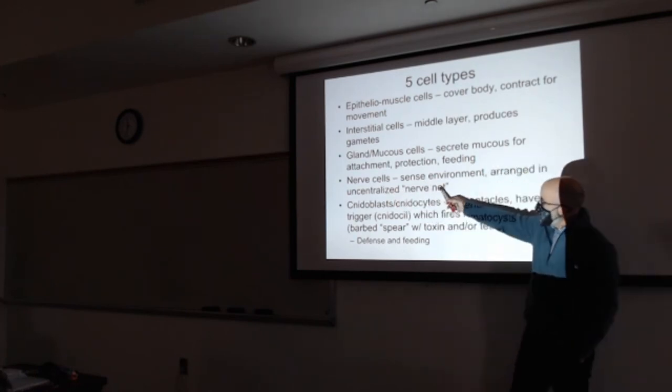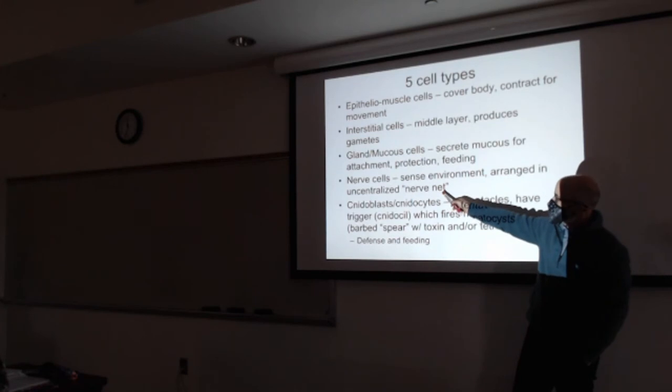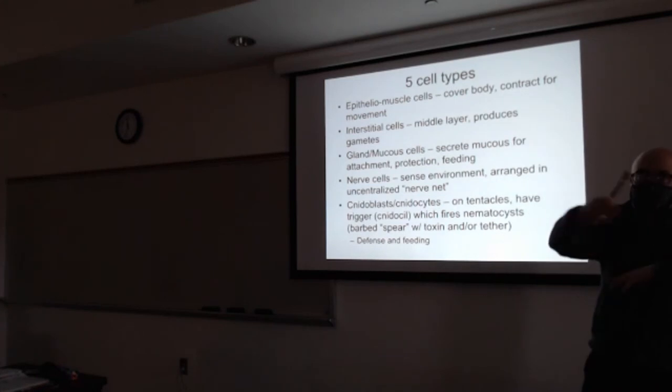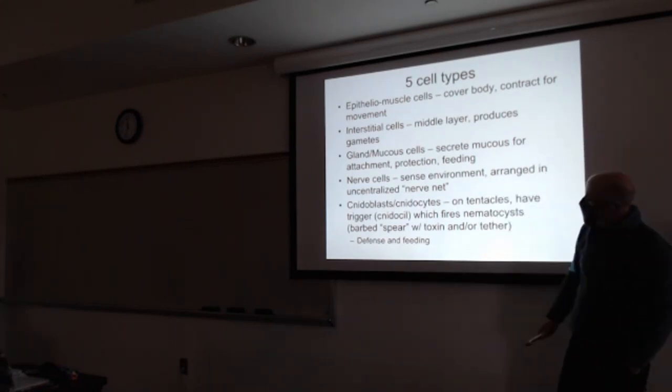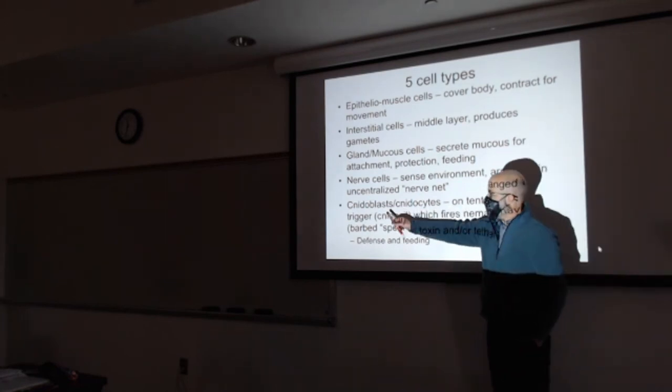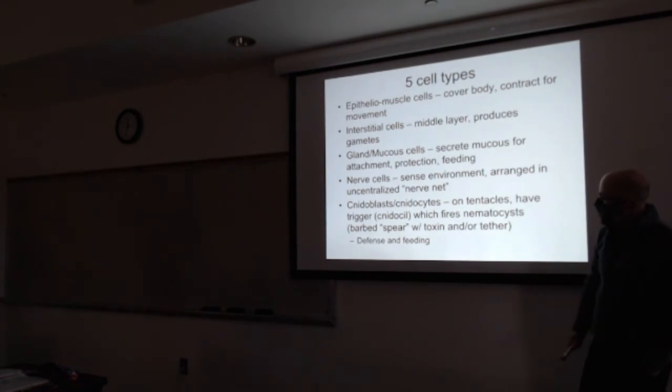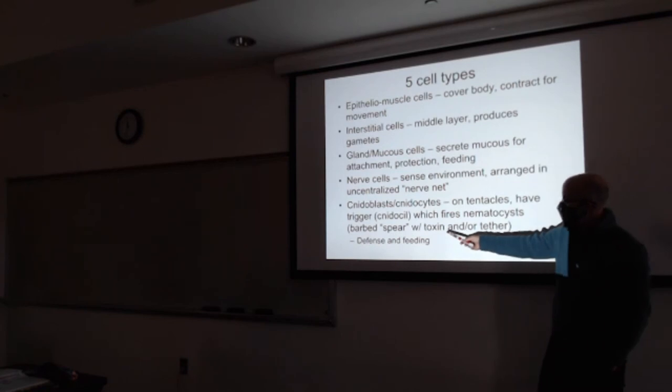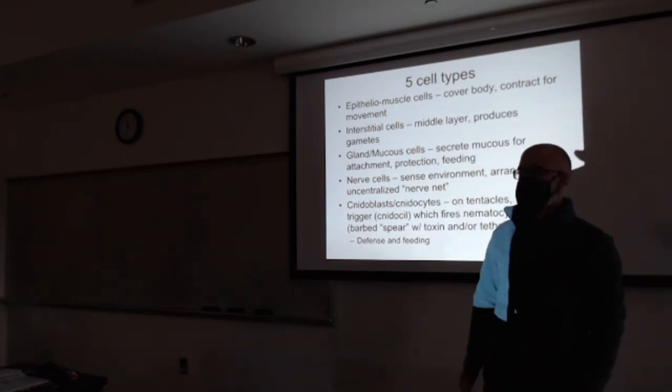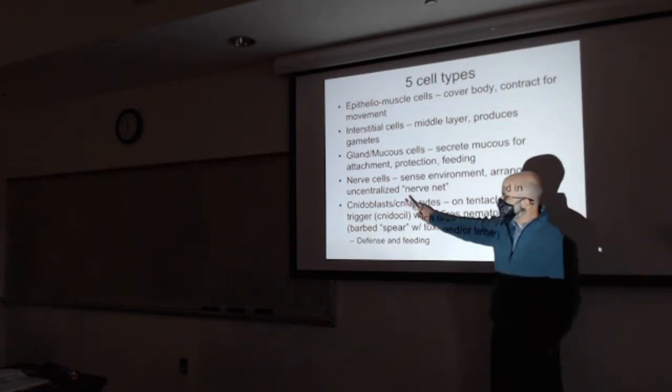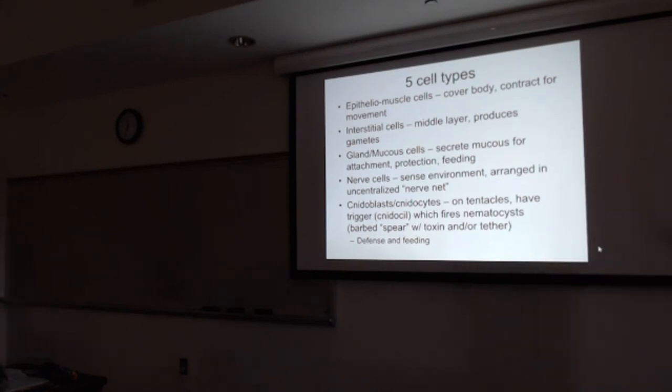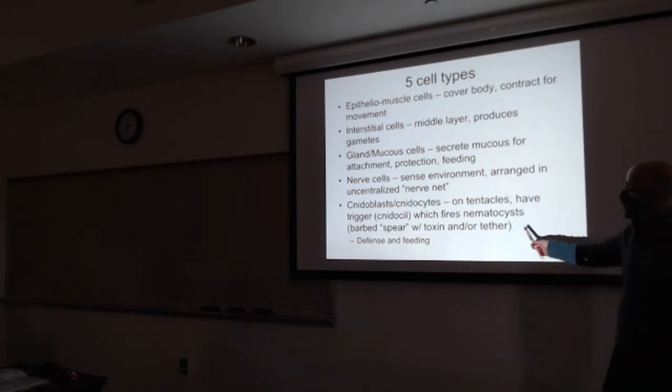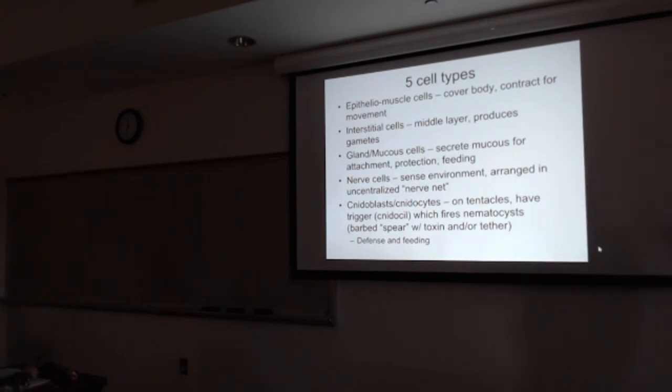Nerve cells are really specialized in sending impulses. In the cnidarians, there's no brain, there's no centralization of the nervous system. They have this diffuse net of nerve cells that allows them to sense their environment. And then the fifth one here is really specialized for cnidarians, which are these things called cnidocytes. They're on tentacles. They have a little trigger. And they have these little venomous cysts that can pump venom and toxin into their victim. Check out that video I posted on Canvas. If you go to high magnification, you can see the individual little cnidocytes on the tentacles there.